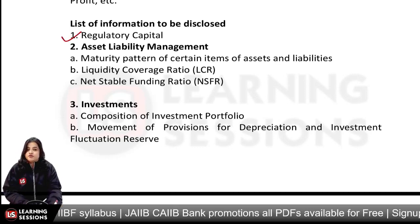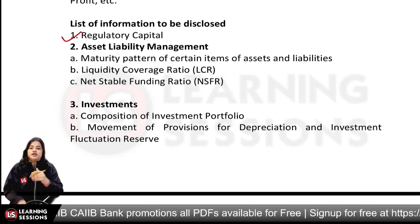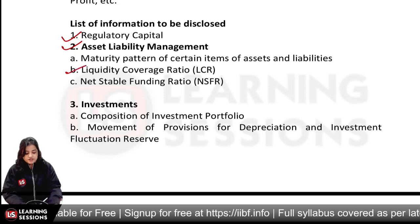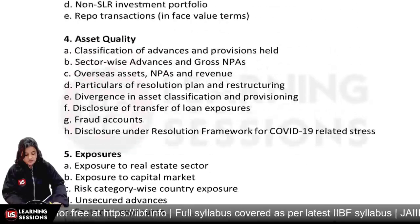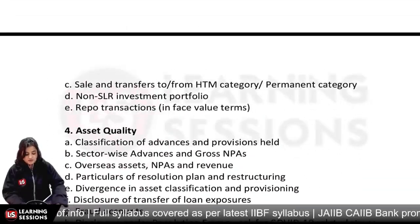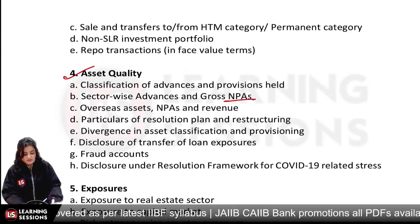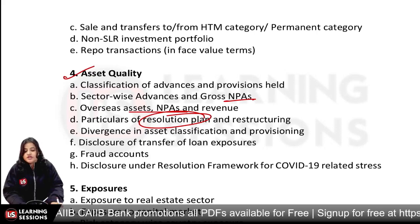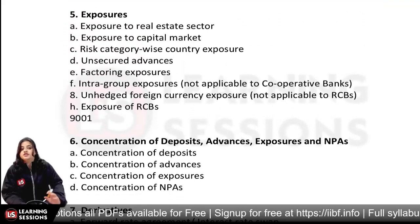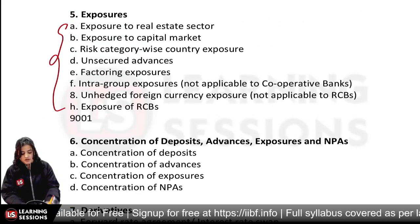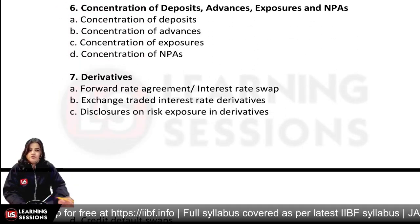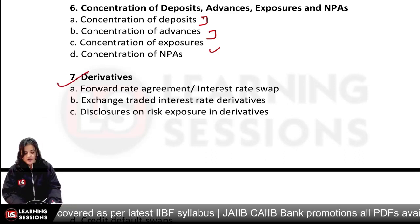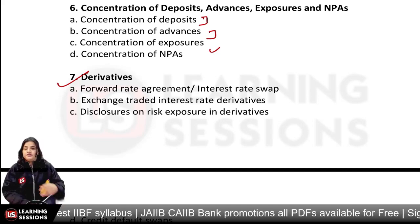The information to be disclosed includes: how much regulatory capital you are maintaining and the minimum requirement; asset liability management — especially for banks; liquidity coverage ratio; maturity profile. You also have to give disclosures on asset quality — overseas assets, NPA levels, resolution of NPA accounts, fraud disclosure, exposure and risk in detail, deposit concentration, advances exposure, and derivatives disclosure.